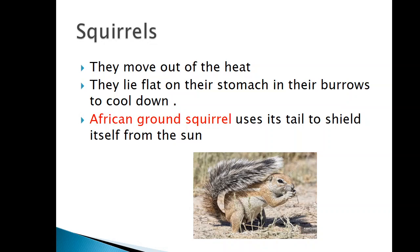Our first animal is a squirrel. During hot weather, they move out of the heat and go into their burrows and lie flat on their stomachs so that they can cool down. Now we also have an African ground squirrel. This one uses its tail to shield itself from the sun. As you can see in the picture, its tail is bushy and is able to provide it with shade.